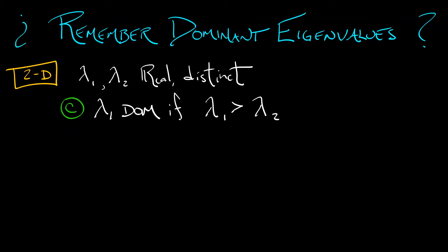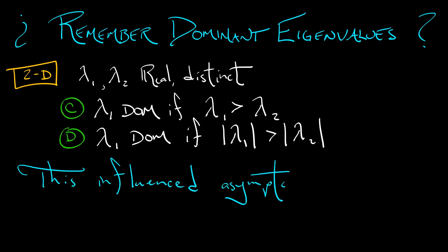On the other hand, in discrete time, we had to be a little more careful. We had to say that lambda 1 dominates if it's bigger than lambda 2 in absolute value.